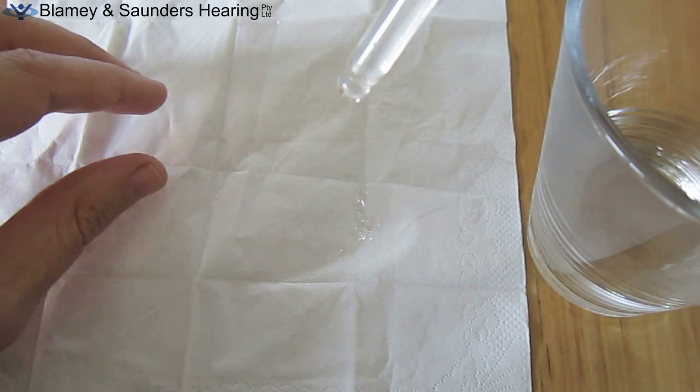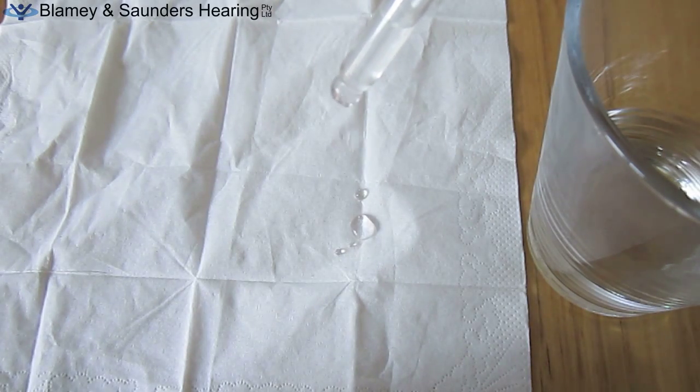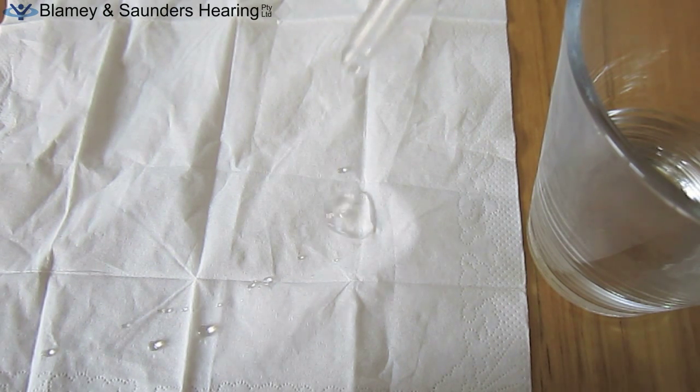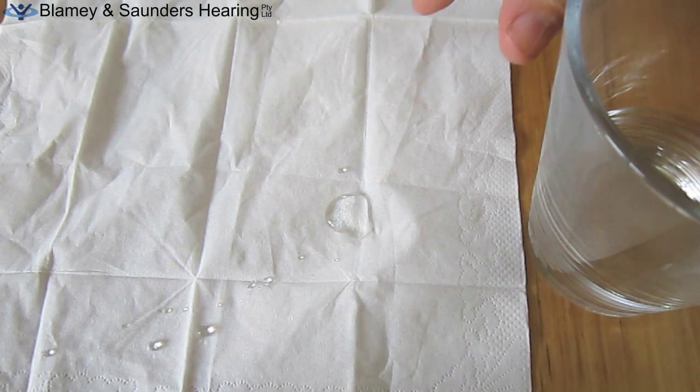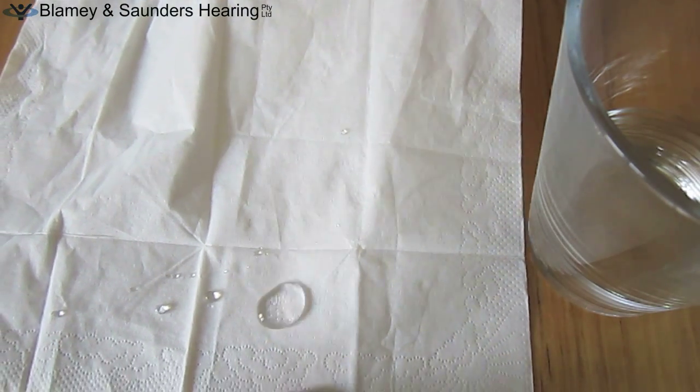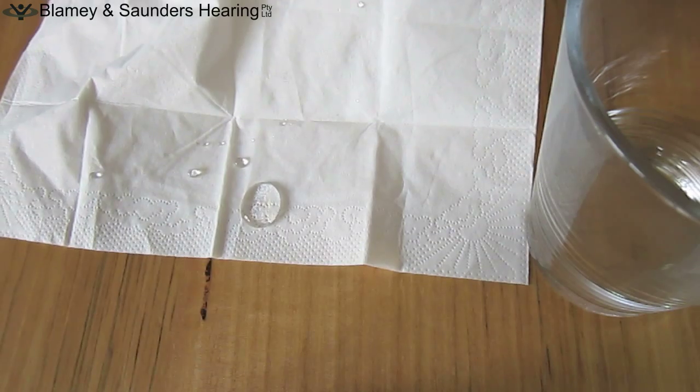Here is a normal tissue that was coated with the hydrophobic nano water repellent. This is a glass of tap water. We apply drops of the tap water onto the tissue using an eyedropper. As you can see, the water beads, and then when the tissue is lifted, the water runs off.